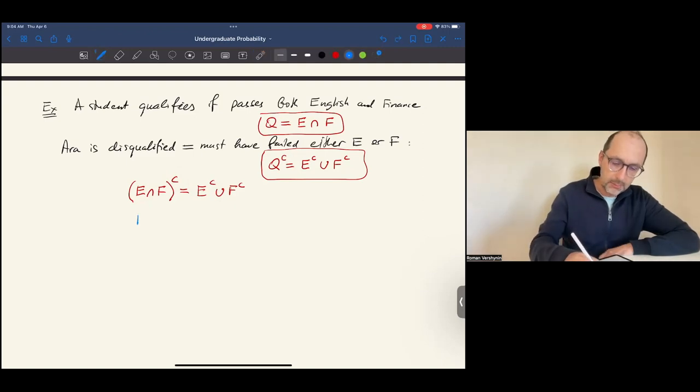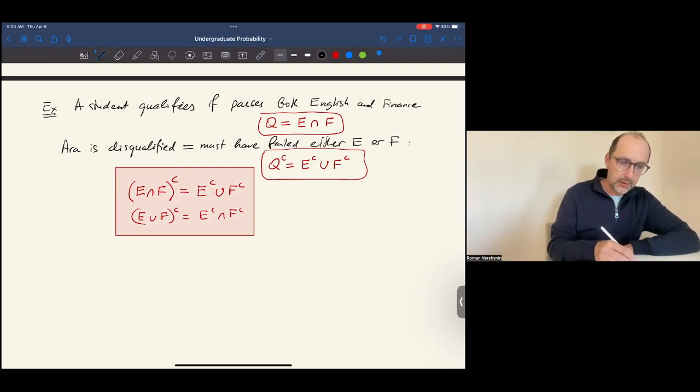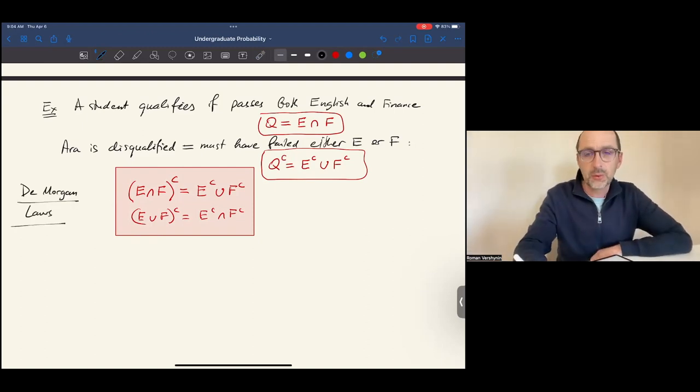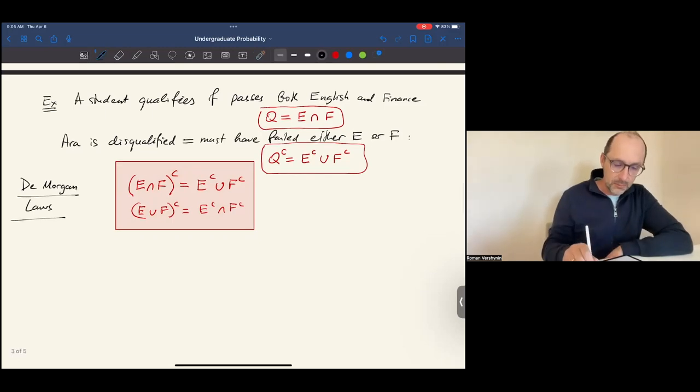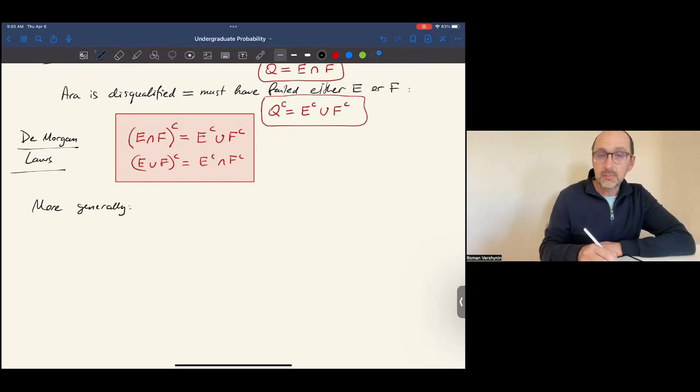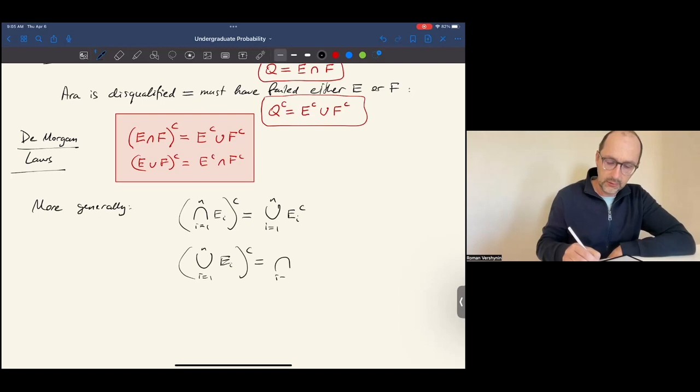Similarly, the complement operation turns the union into intersection. So these two equations hold for any events E and F, and they are called De Morgan laws. They are very important and will be applied throughout this course. In logical terms, the negation of AND is OR, and the negation of OR is AND. More generally, De Morgan's laws apply to multiple events. The complement to the intersection is the union, and the complement to the union is intersection.